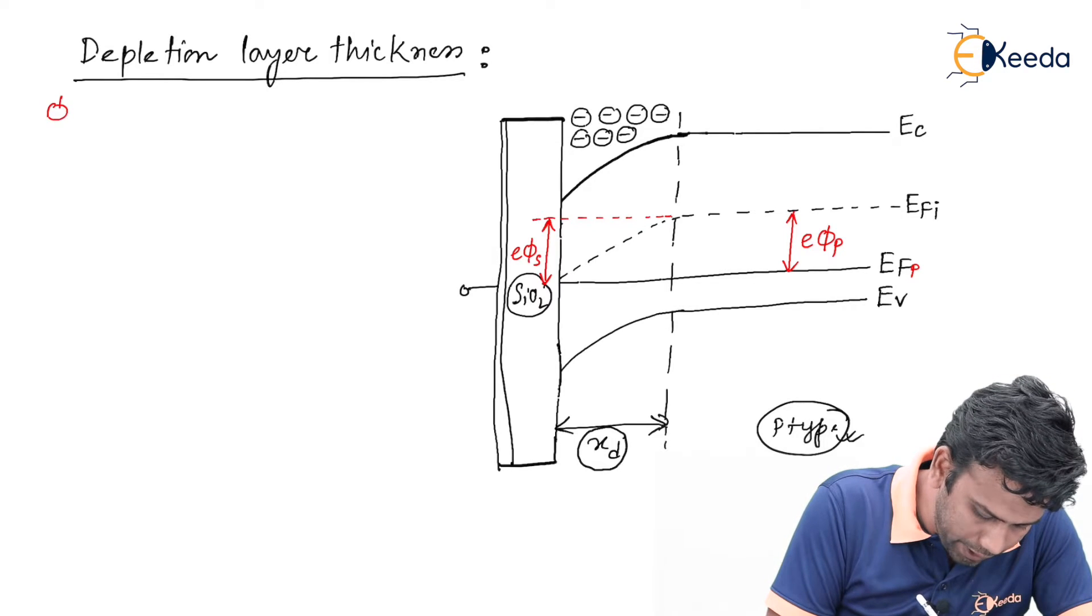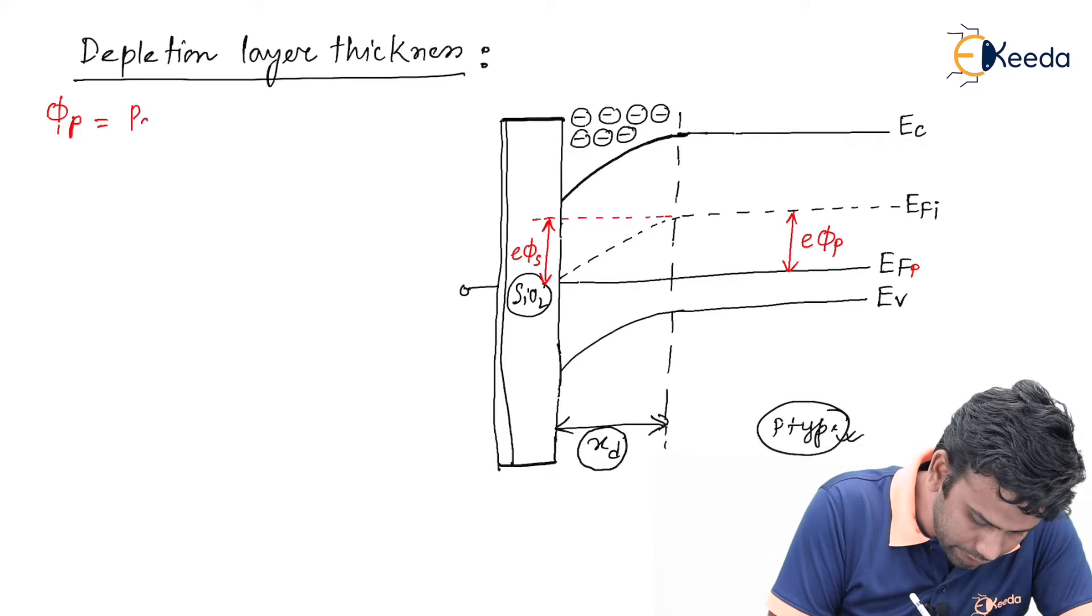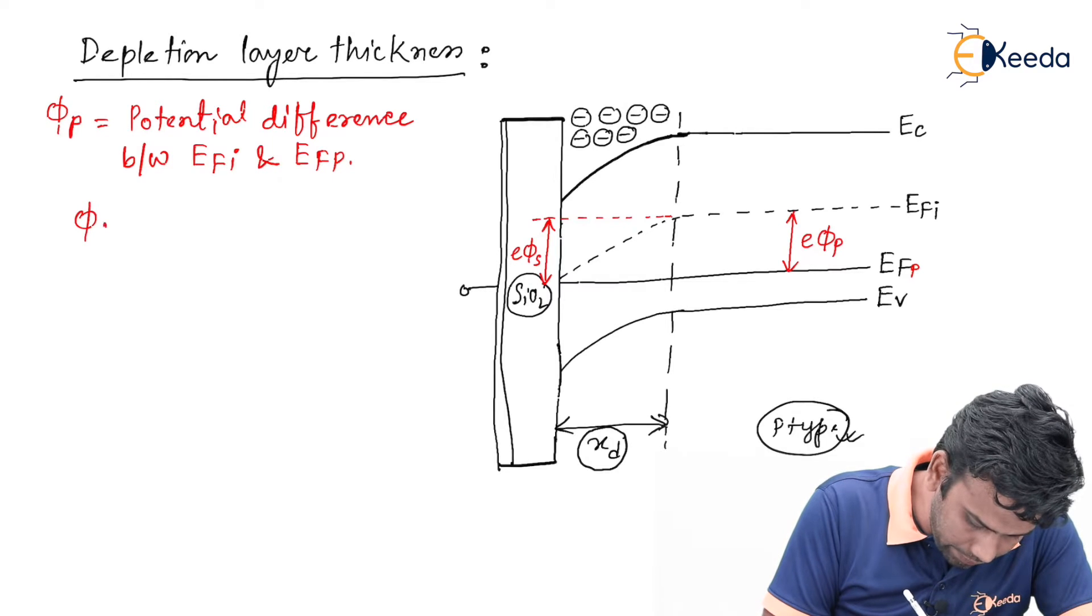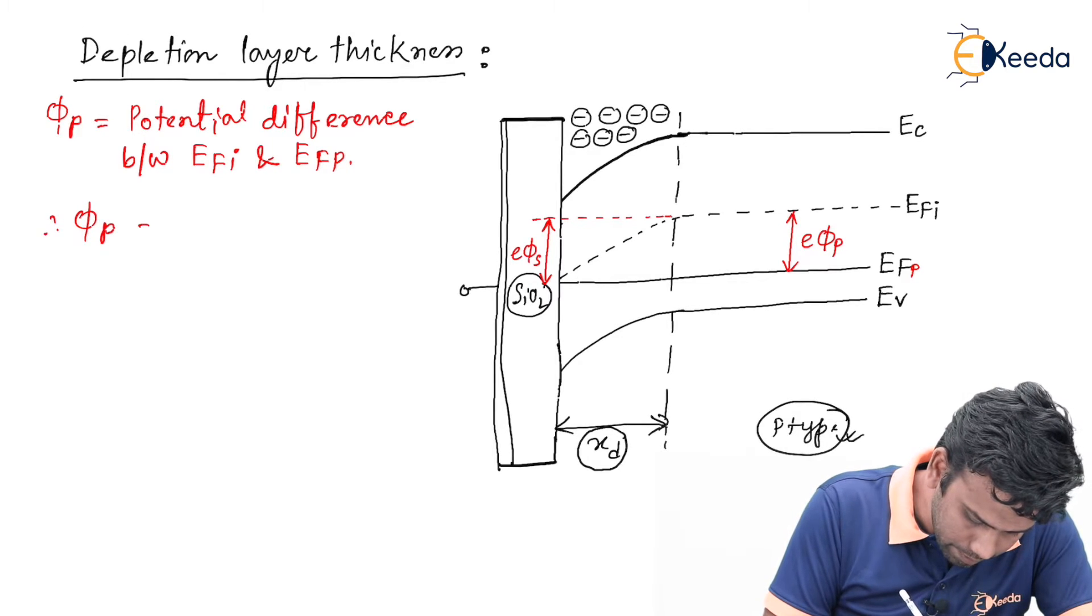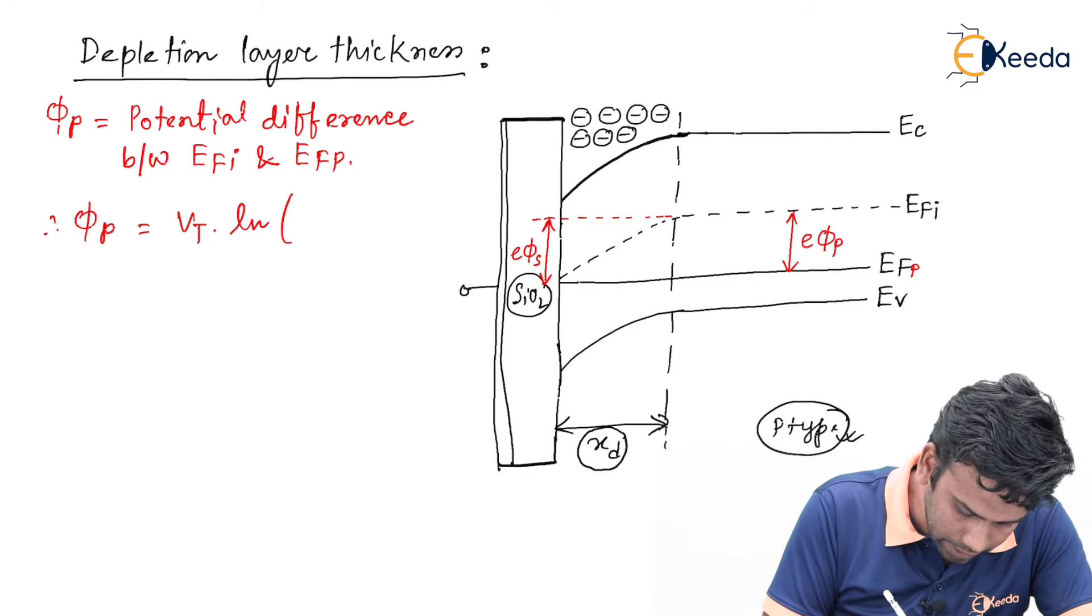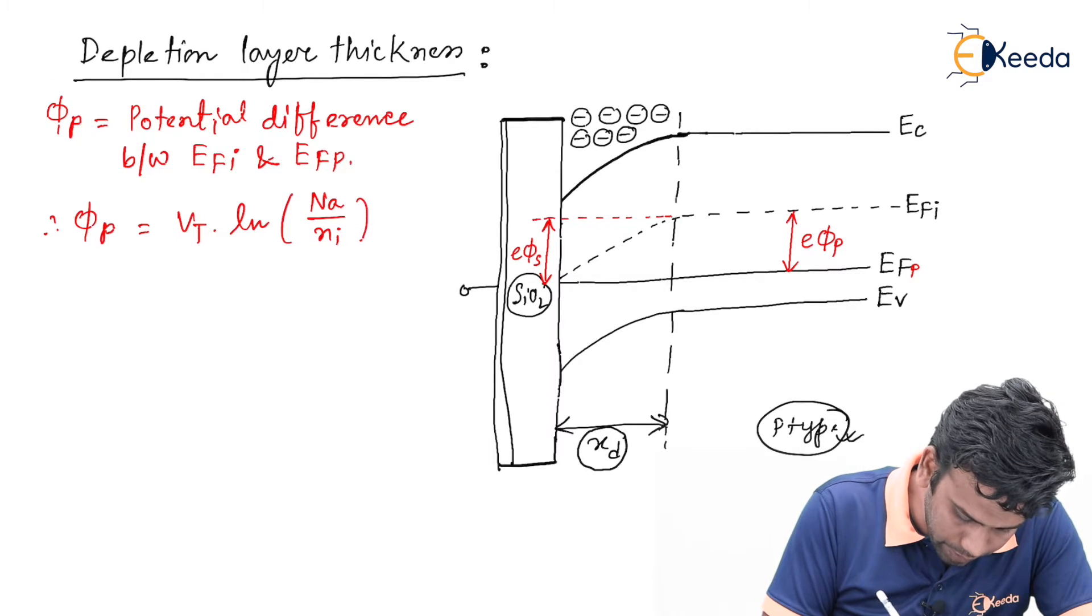We can say that phi p is the potential difference between E Fermi and E Fermi intrinsic, and this phi p can be given by the equation Vt ln Na by Ni.